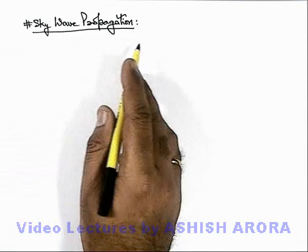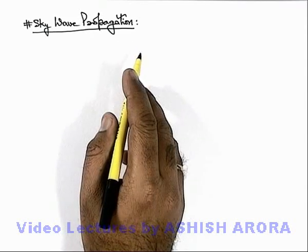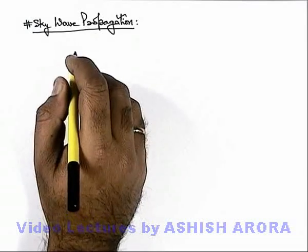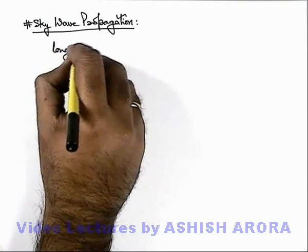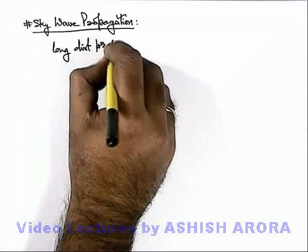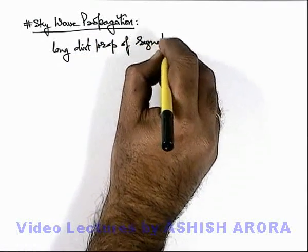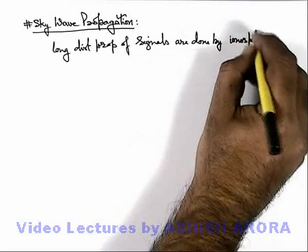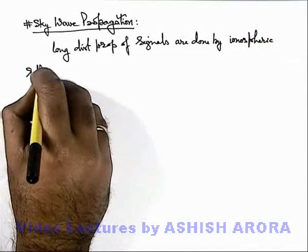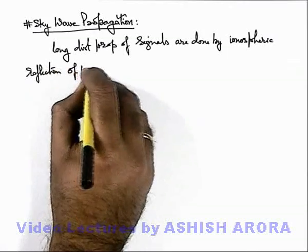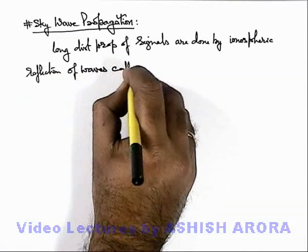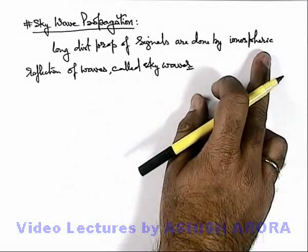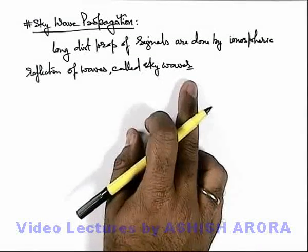Now we'll study about sky wave propagation. We have discussed in the previous section about ground waves, which have relatively less range, so for less range propagation ground waves are used. Long distance propagation of signals is done by ionospheric reflection of waves, called sky waves. When waves are reflected by ionospheric layers of Earth's atmosphere, these are called sky waves.